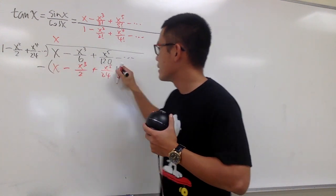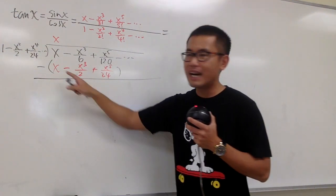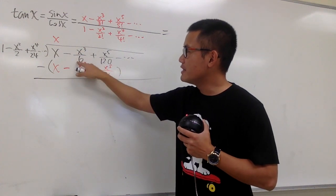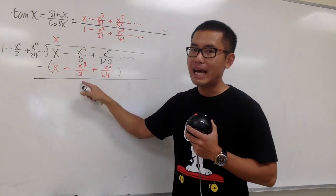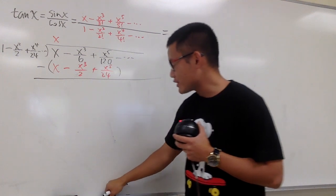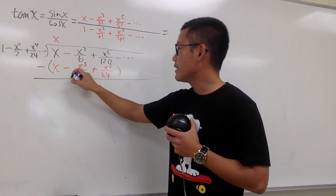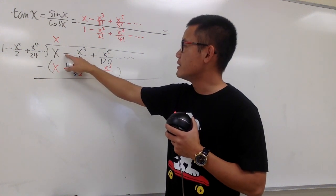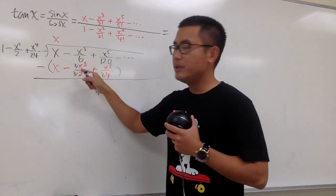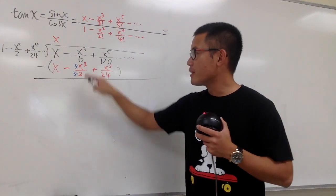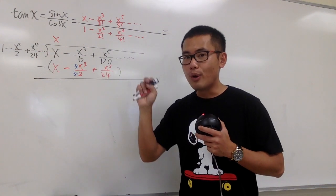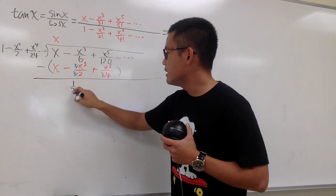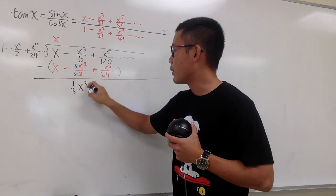Then we subtract. Here x minus x is just 0, so that's good. Here we have negative 1 over 6 plus 1 half. To work out the fraction, get the common denominator — multiply top and bottom accordingly. This is technically negative 1 plus 3, which is 2, over the denominator 6. Two over 6 reduces to 1 third. So this gives us 1 third for the x to the third power term.